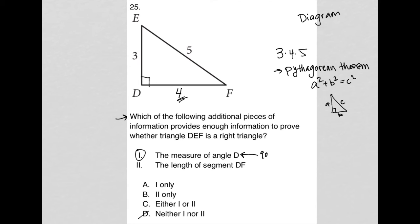And then, so that makes D gone because it says neither one or two. Choice two, the length of segment DF. I like that as well, right? Because if DF is four, then we do know that this is a right triangle. And if it's anything other than four, then we also know that it's not a right triangle.